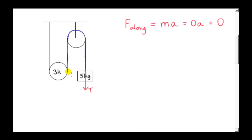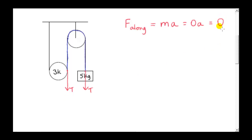Since the resultant force along the string is zero, we see that the force on the end of this section of string that just meets the movable pulley must have the same magnitude as the force T. So this force also has magnitude T. T minus T gives us zero, and that's what we want — a resultant force of zero along the string.